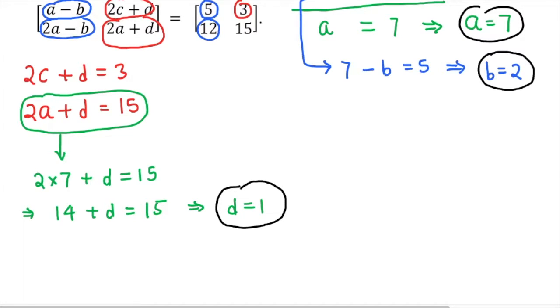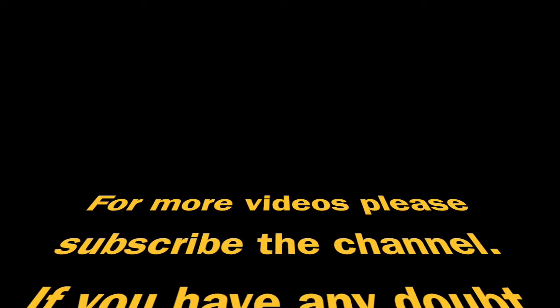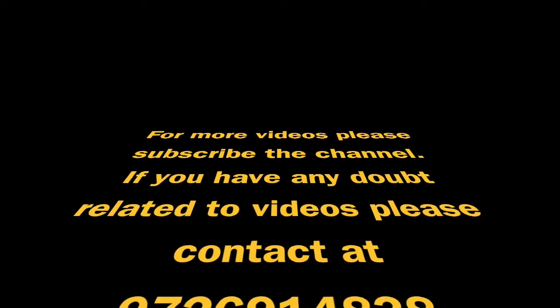Now from this equation you can find the value of C. Take 2C plus D equals 3. The value of D is 1, so 2C plus 1 equals 3, which means 2C is equal to 2, so C is equal to 1. Final answers: A is 7, B is 2, C is 1, D is 1.